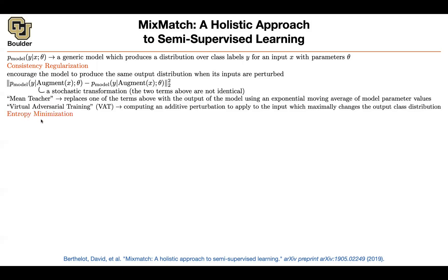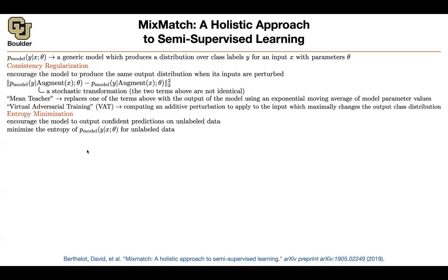You can do entropy minimization, which says that you're going to encourage your model to output confident predictions where you have unlabeled data. You can look at the entropy of your model on your unlabeled data and minimize that. This is going to make your model more confident.